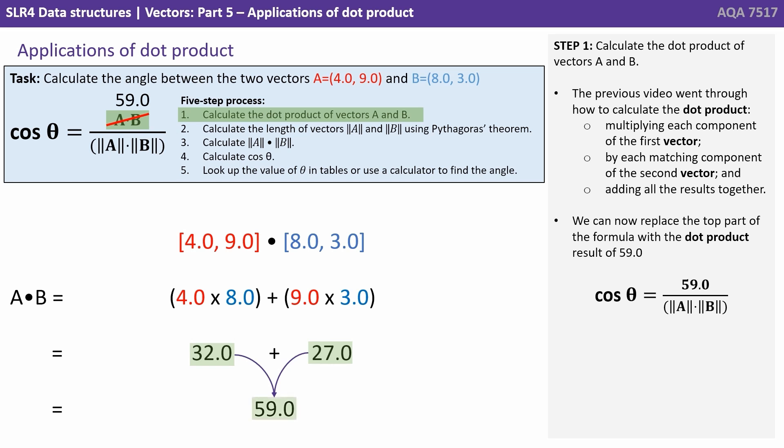So we can now replace the top part of our formula with the dot product which was 59. That's step one done.